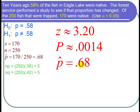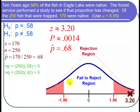On a picture, what we can look at is 3.20, that was the z value. This is a two tail test, so I shade in both tails.